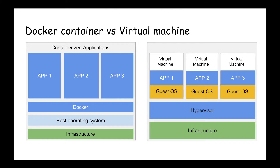Here in this diagram you can see on the left hand side we have an image of a Docker container and on the right hand side we have an image of a virtual machine.